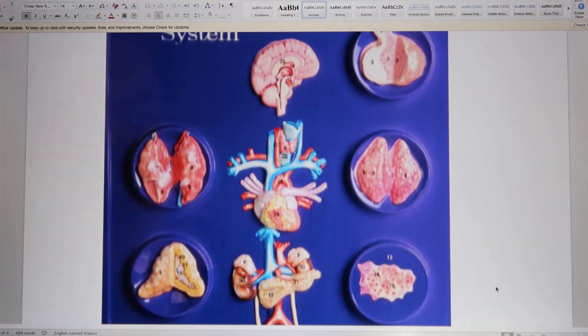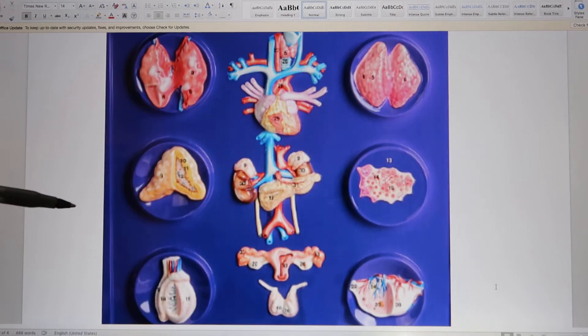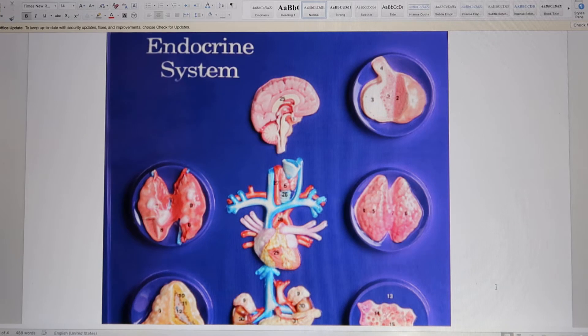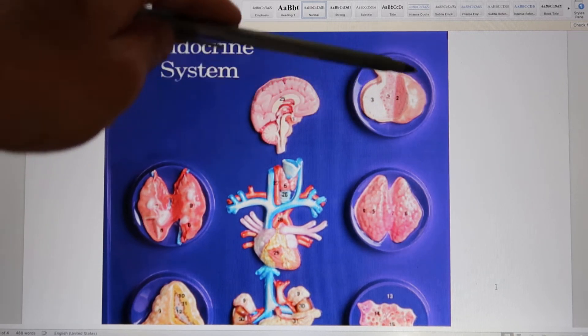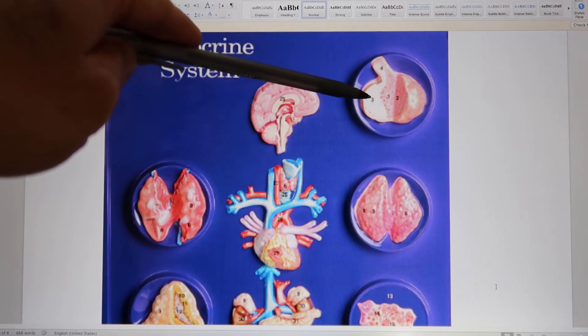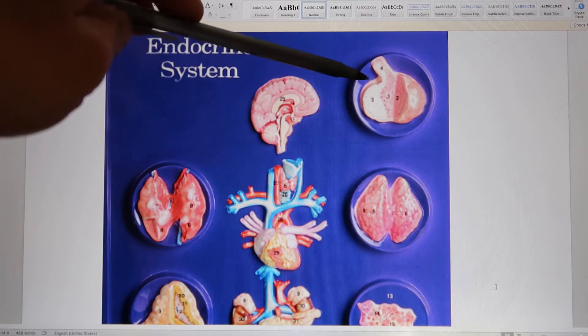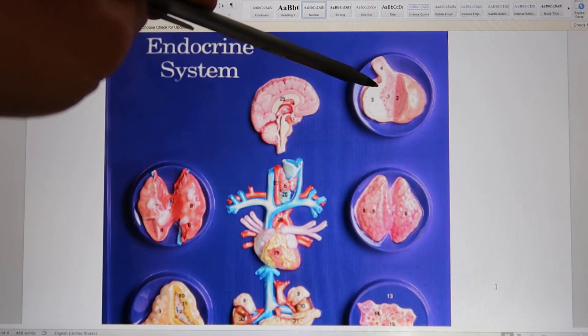So the endocrine system's model looks like this. This is the picture from the model. It shows you all the endocrine glands start from the brain. This one, that's the pituitary gland. It includes the anterior pituitary and the posterior pituitary gland. So if I point at this one, ask you what's this endocrine organ, your answer will be the pituitary gland.